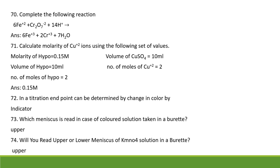In a titration, the end point can be determined by change in color using an indicator. In a colored solution taken in the burette, we read the upper meniscus. Please remember: colorless solutions — read lower meniscus; colored solutions — read upper meniscus. For example, KMnO4 is a colored solution, hence we read the upper meniscus.